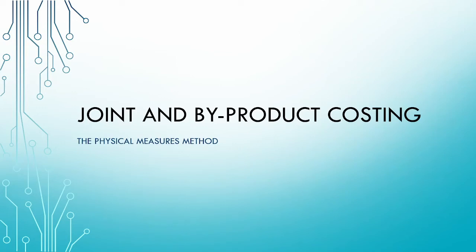Welcome to the second video in our series on joint and byproduct costing. In this video, we are going to have a look at the first of our four methods of allocating the joint costs, namely the physical measures method.